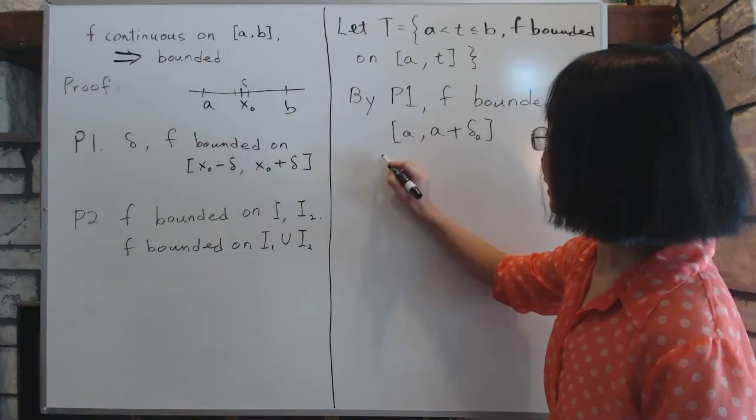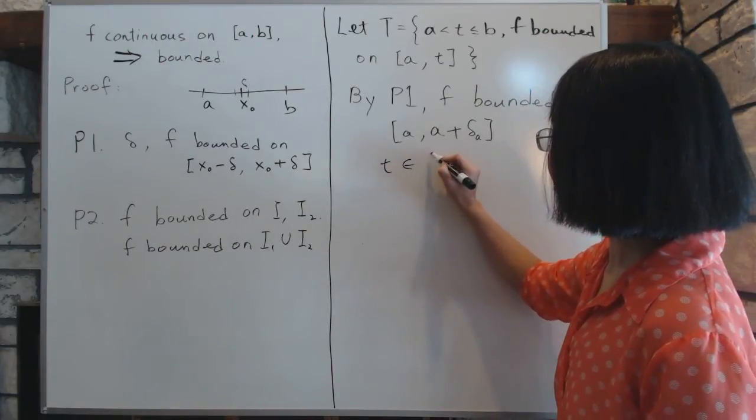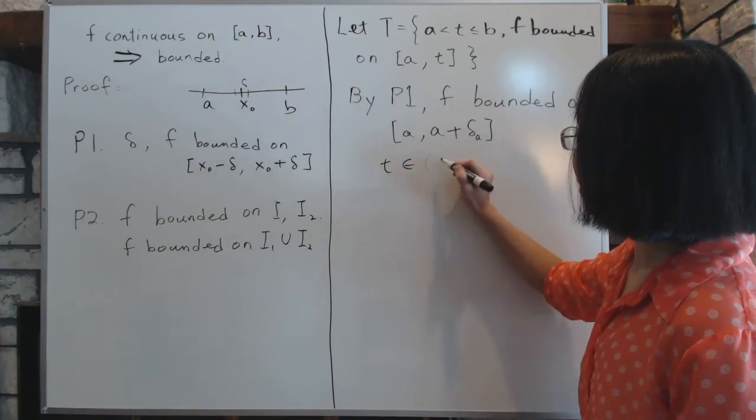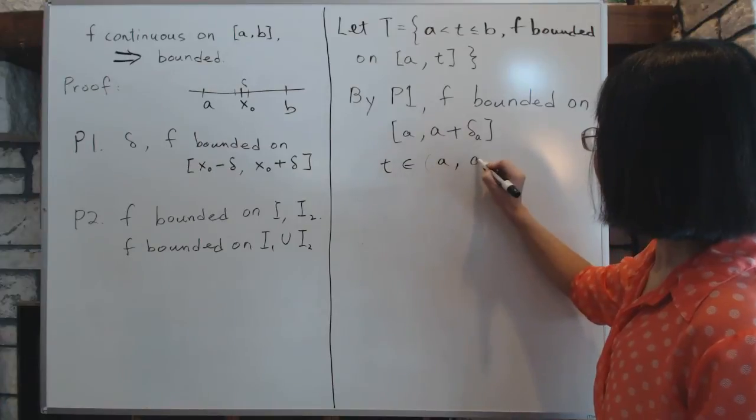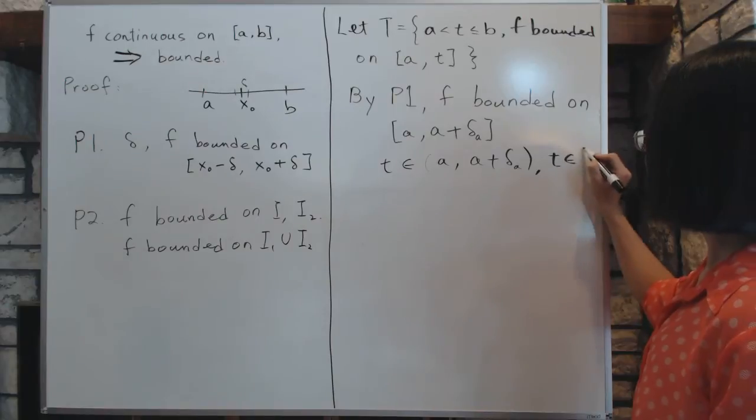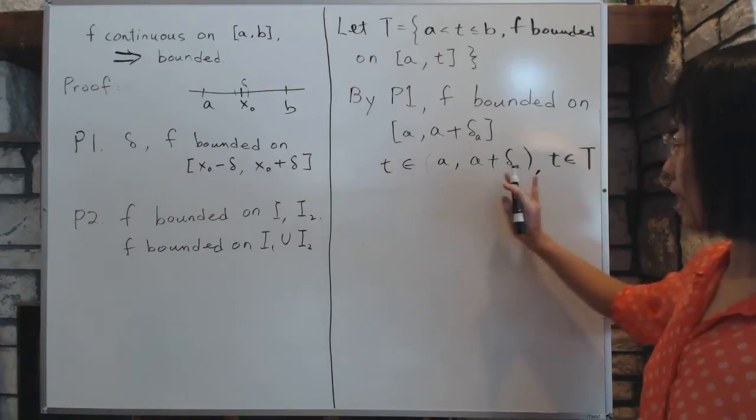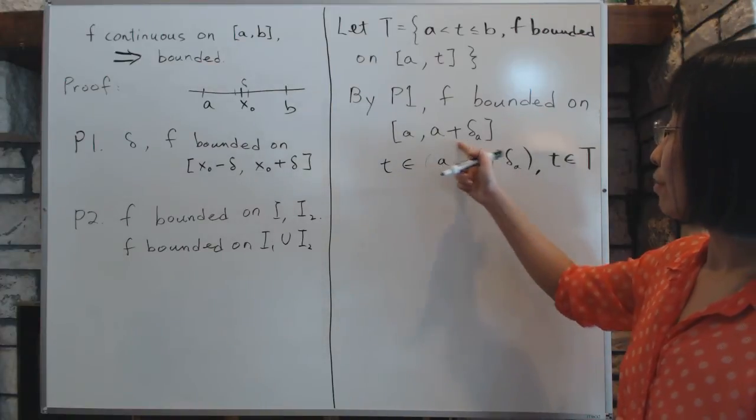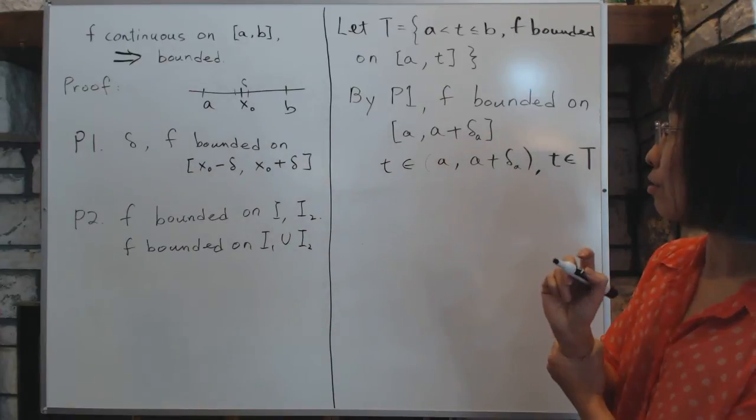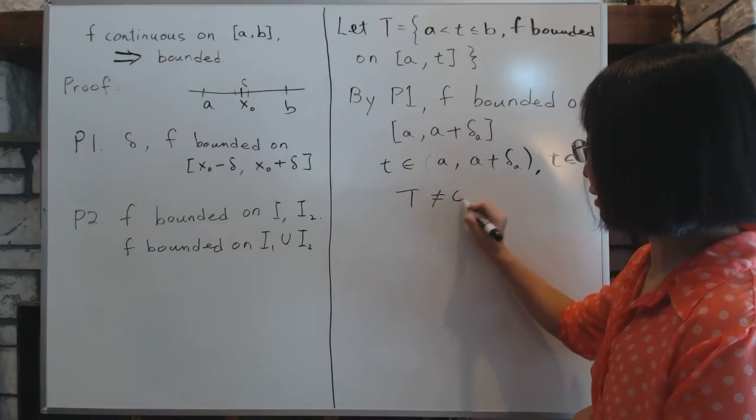That means any number that's inside t, so if t is inside the interval from a to a plus delta of a, then t belongs to T. Because this exists, then we know, as a result, this t actually will exist, because from a to a plus delta of a, it actually does exist. That is, delta a is bigger than zero, so then we know that the set T is not an empty set.